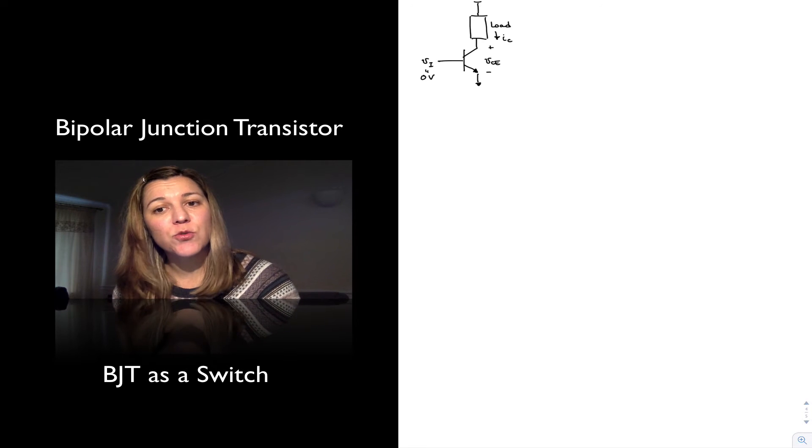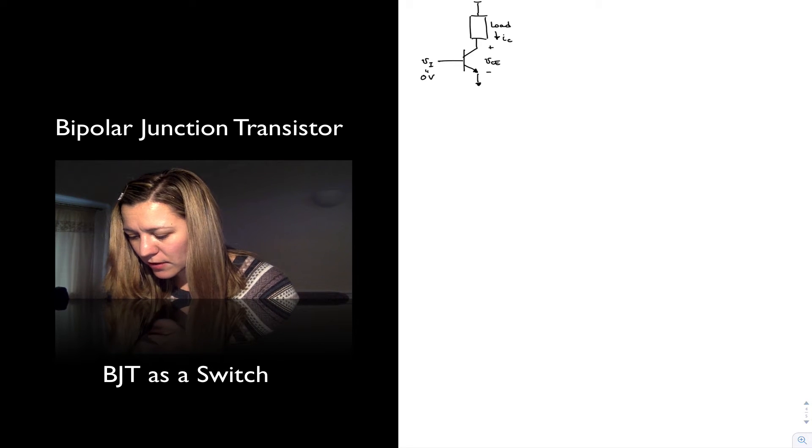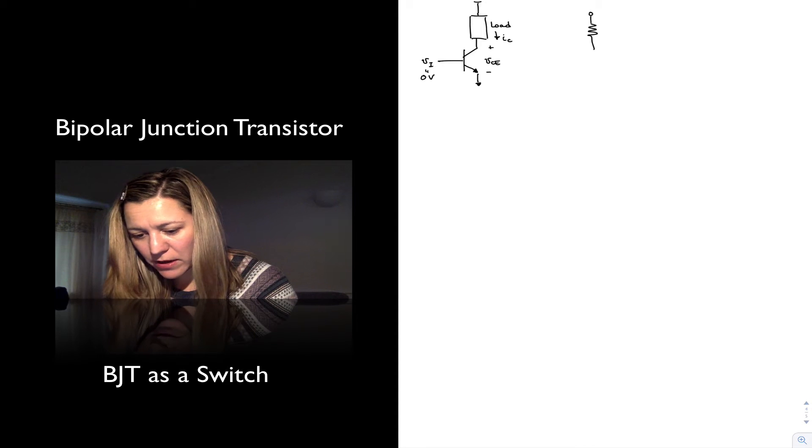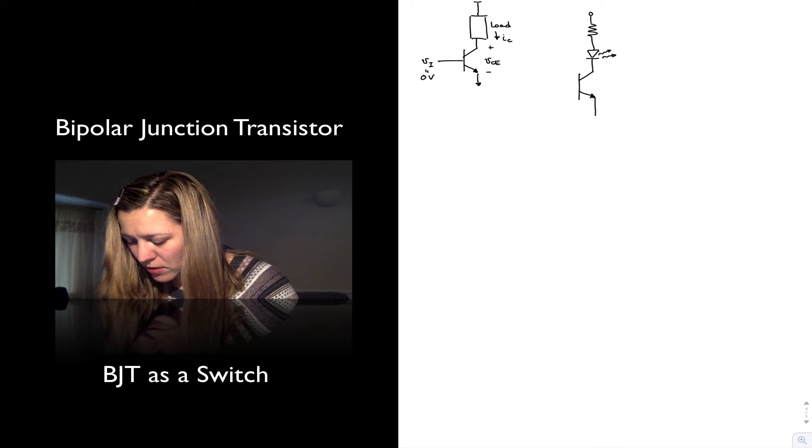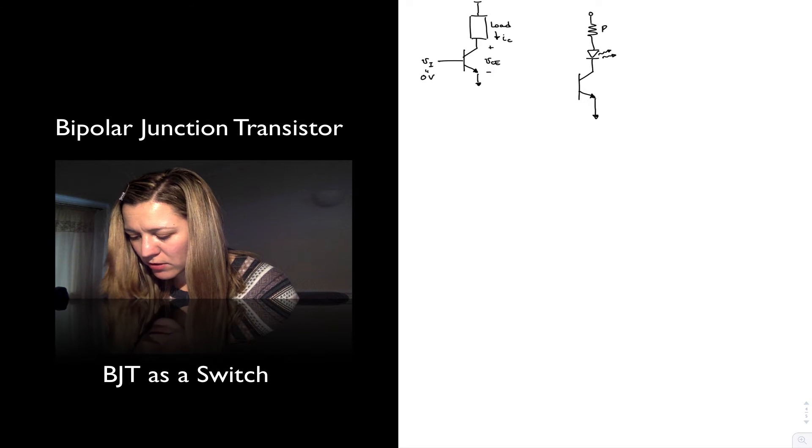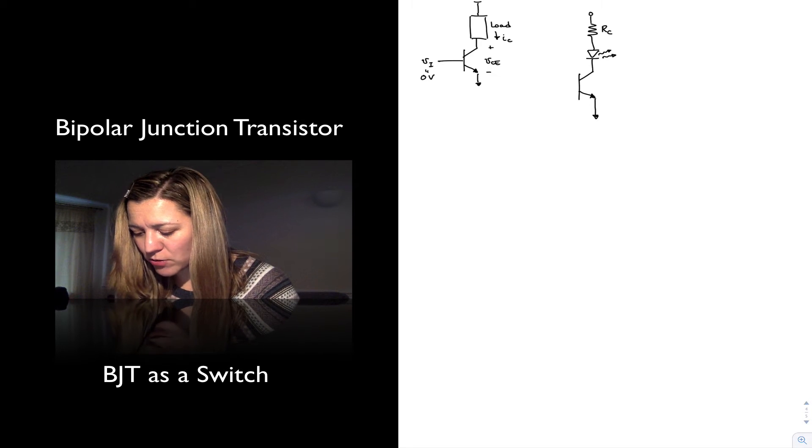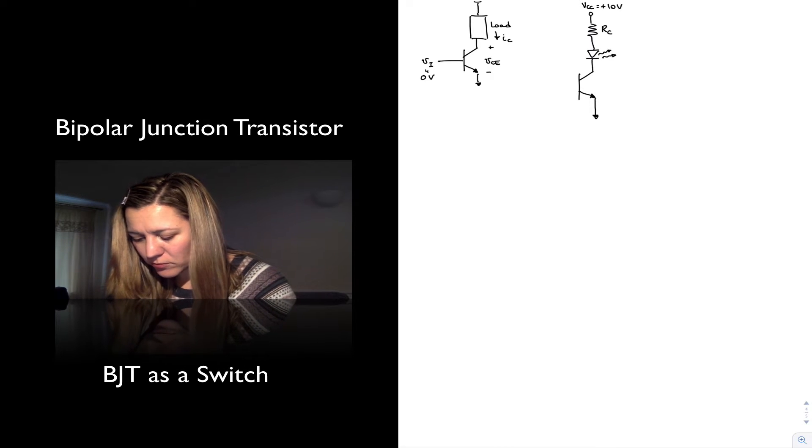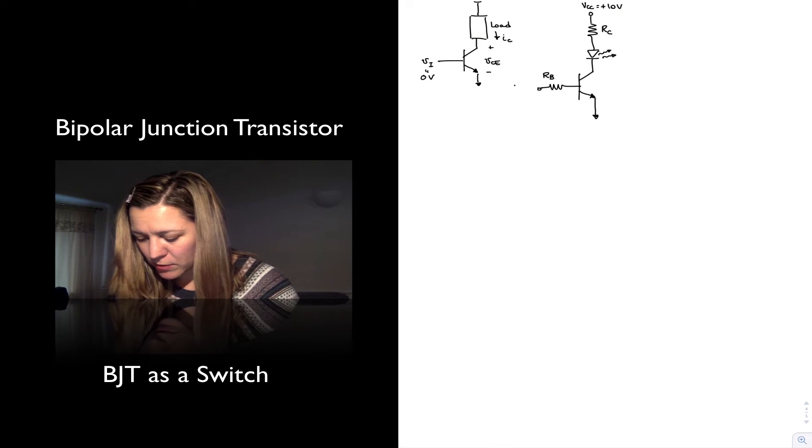Let's consider a BJT switch that is trying to turn on or off an LED light. And so I'm going to have my LED light, light emitting diode, connected to my transistor. Here I have added a small resistor at the collector.